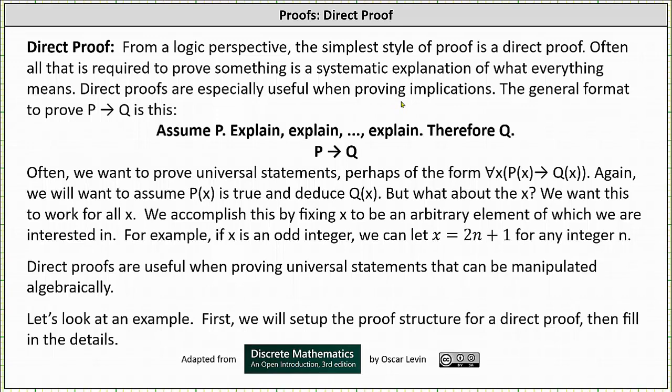Direct proofs are especially useful when proving implications. The general format to prove P implies Q is to assume P is true, explain, explain, explain, therefore Q is true.